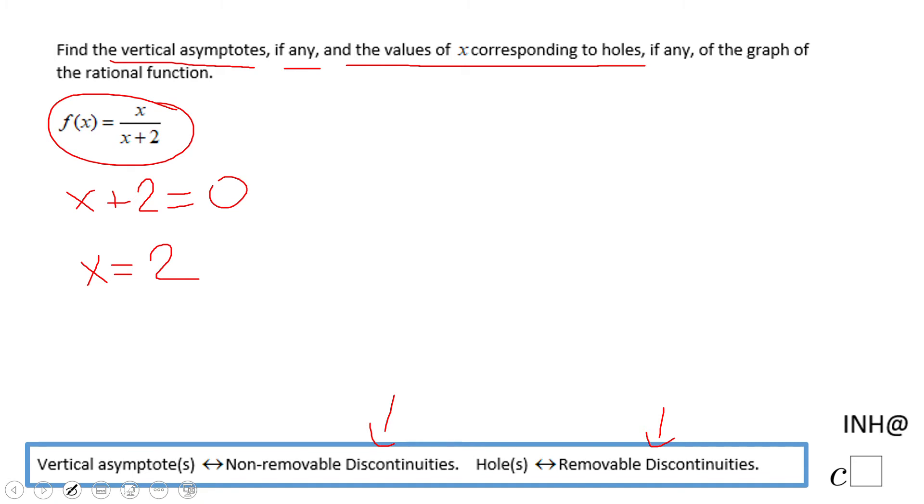How do you know the difference? Very simple. If you can simplify your rational expression, then it's a hole. If you cannot, then it's a vertical asymptote. So in this case, since this x over x plus two cannot be simplified, this is a vertical asymptote. This is a non-removable discontinuity, so it's a vertical asymptote.